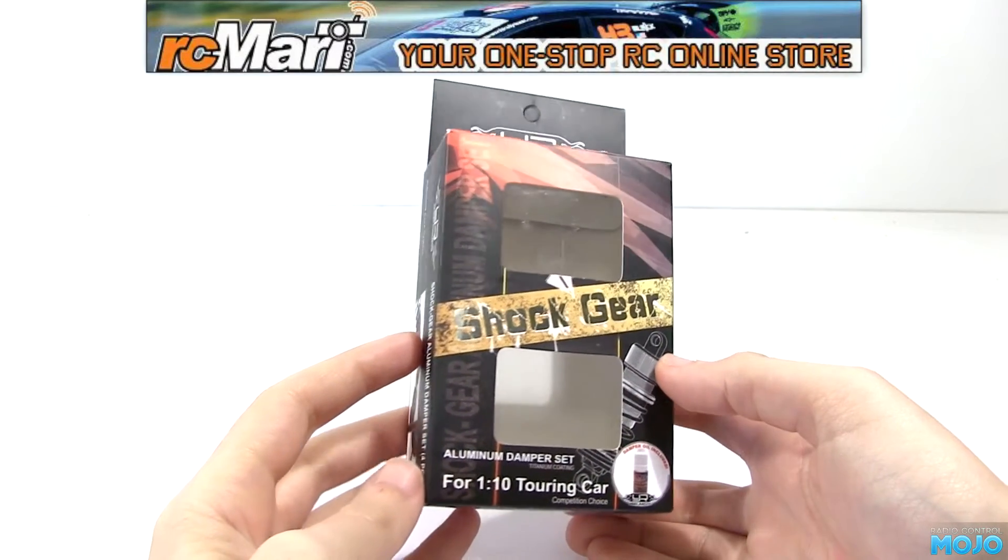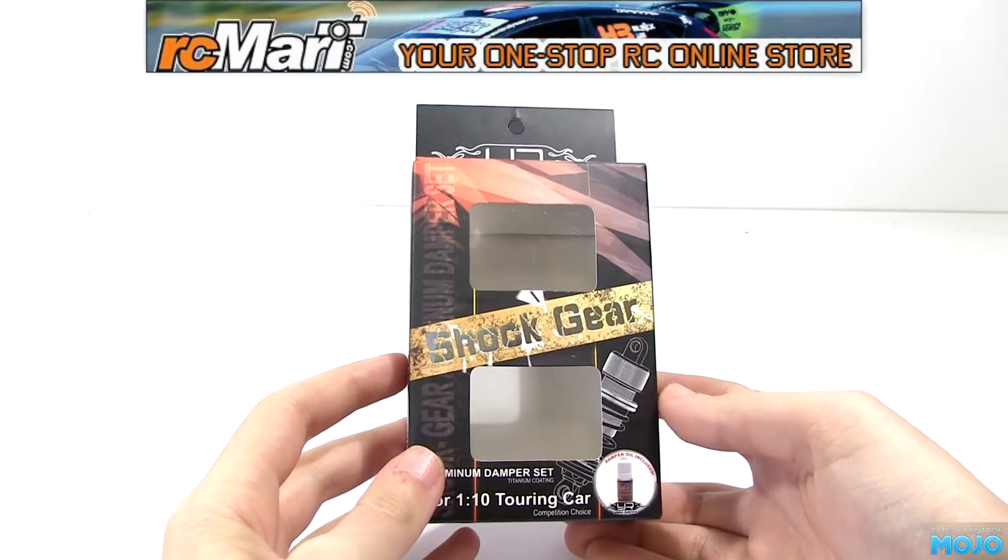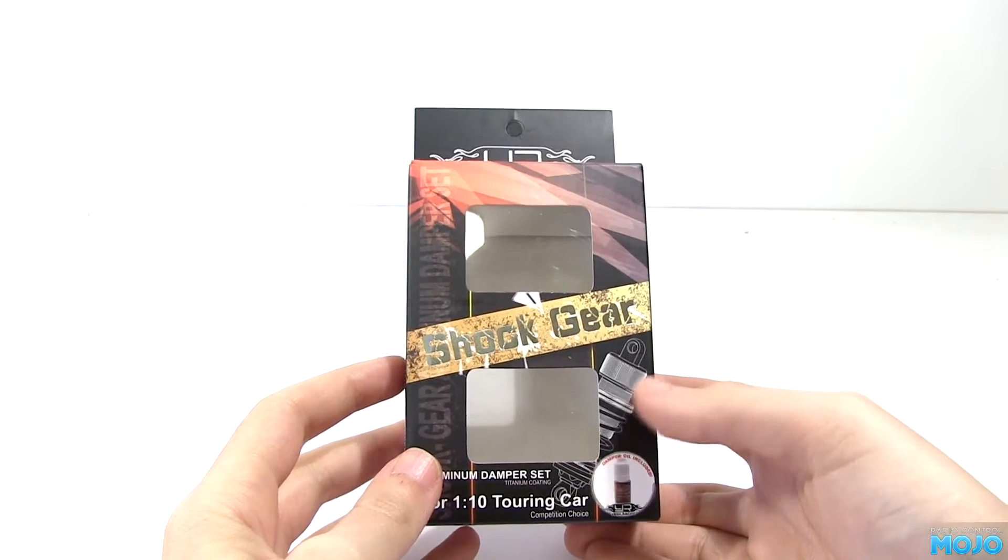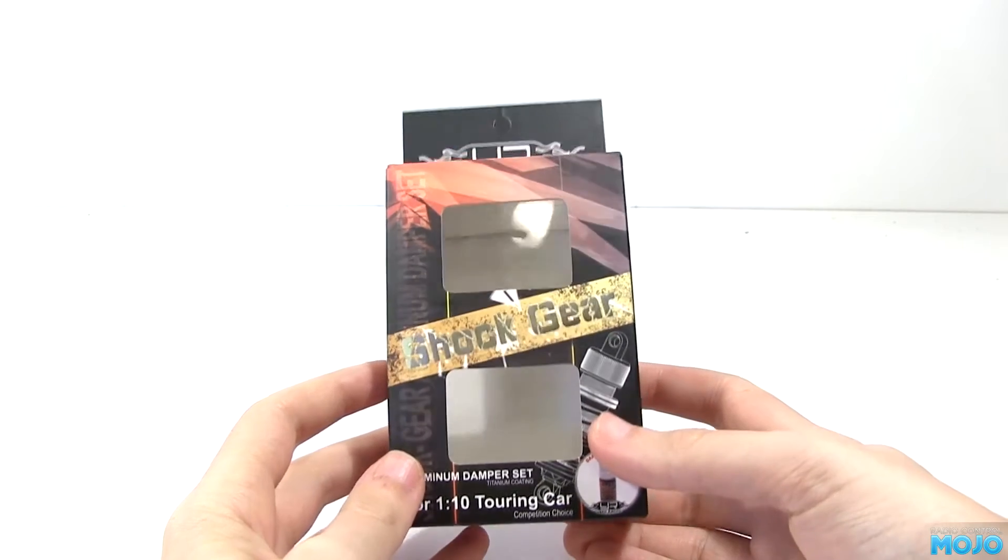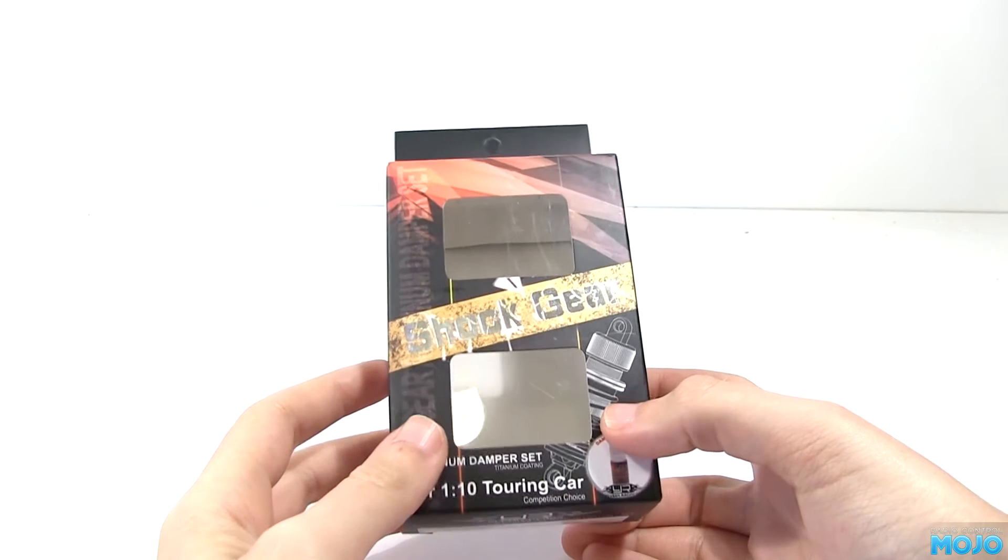DSG-0050BU. Nice! They're 50mm, so will fit lots of different cars, including the TT01 if you're not looking for a suspension lift. There's a couple of other lengths available too.